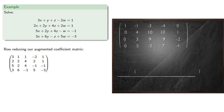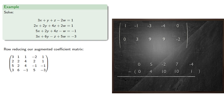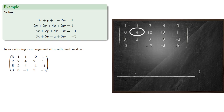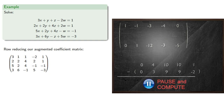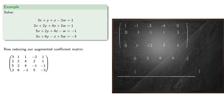Moving on to our next row, we see that the leading coefficient is actually smaller than the coefficient in the third row. So we'll subtract the second row from the third to get a new third row. Now the second row coefficient is larger than any of the others, so we'll subtract the third row from the second to get a new second row.